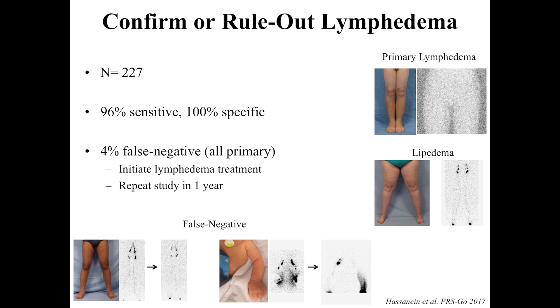On the major indication to confirm or rule out lymphedema: we did a study of 227 patients and found 96% sensitivity and 100% specificity. The patients who failed the sensitivity portion all had primary lymphedema — we've never had a patient we thought had secondary lymphedema with a normal test. Interestingly, all false-negative patients — who I thought had lymphedema by history and physical exam — showed abnormality when the test was repeated a year later. So if suspicion is high and the test is normal, I still treat for lymphedema and repeat the test a year later.